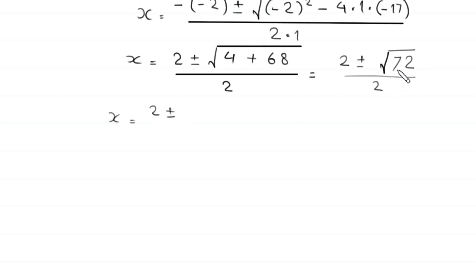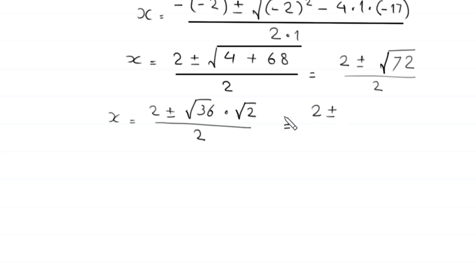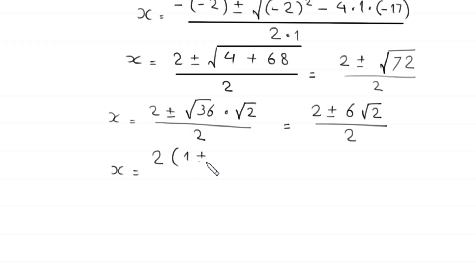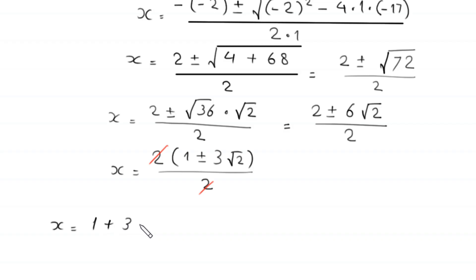Simplifying √72 = √(36 × 2) = 6√2, so x = (2 ± 6√2) / 2 = 1 ± 3√2. Therefore x = 1 + 3√2 or x = 1 − 3√2.